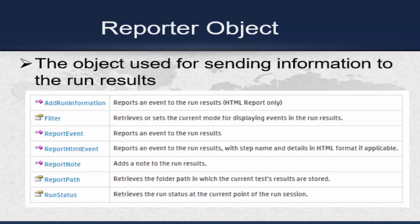The results file will also be helpful to the developers. For example, if we are automating 100 steps but the script fails during execution, by analyzing the results file we can get details like which action, which step, and the reason for the failure. If we can get those details accurately, it will be very easy to fix the issue.